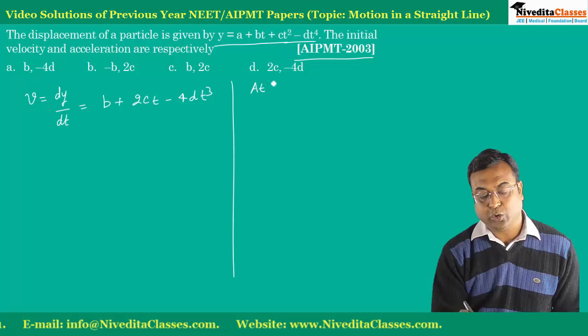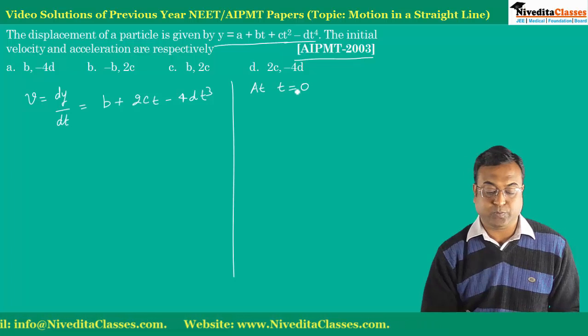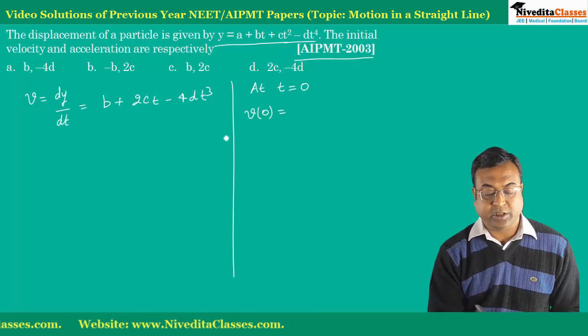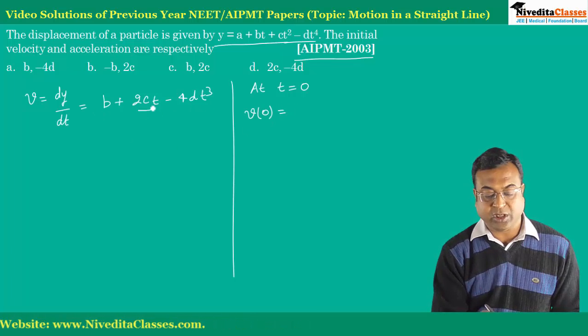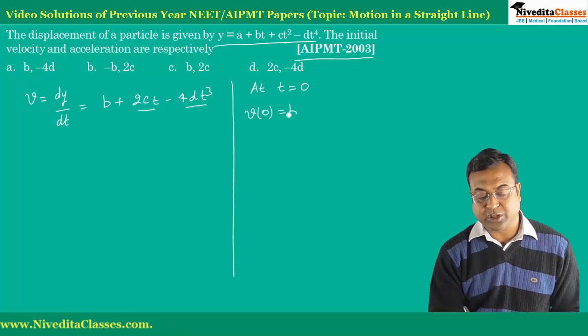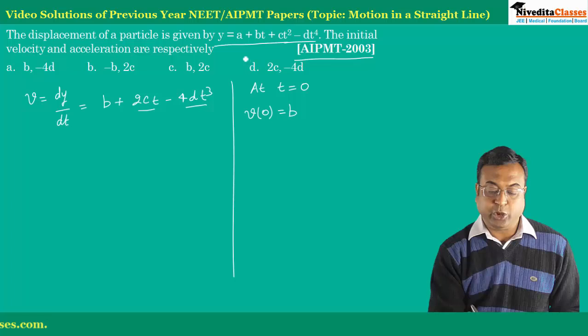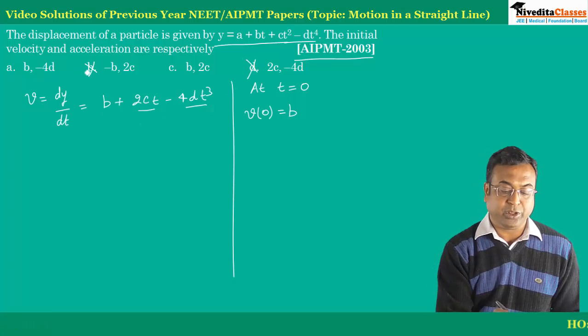Initial means at t is equal to zero. At t equals zero, what will the velocity value be? Look, put zero for t in this. Then this becomes zero, this becomes zero. So only b remains. So velocity is equal to b. So option d cannot be correct, option b cannot be correct.